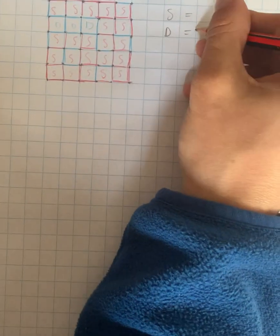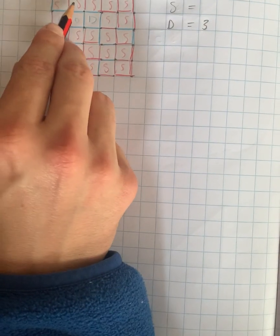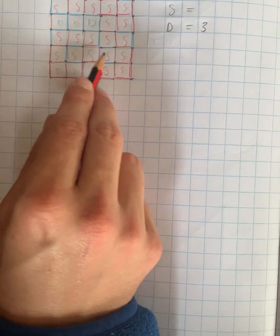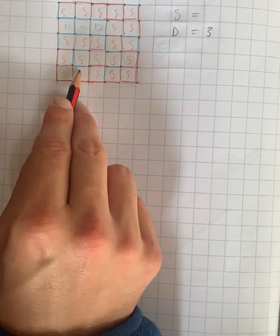So Dylan had 1, 2, 3. S had 1, 2, 3, 4, 5, 6, 7, 8, 9, 10, 11, 12, 13, 14, 15, 16, 17, 18, 19, 20, 21, 22.